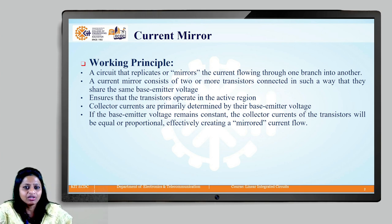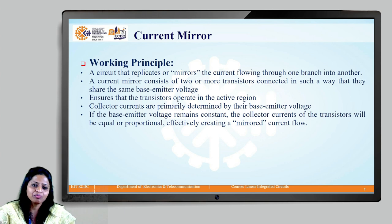With this concept, let us try to understand how we can mirror a current that is flowing into one branch into another branch. The current mirror circuits are special types of the constant current bias.